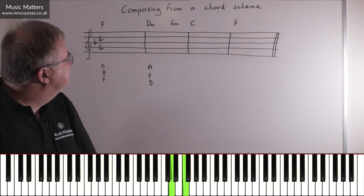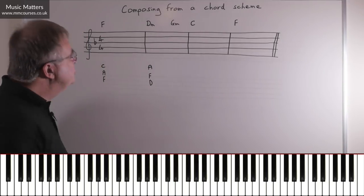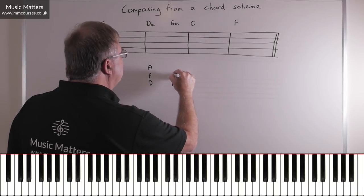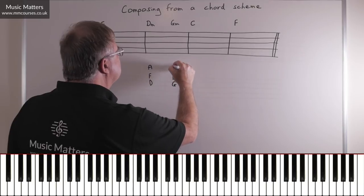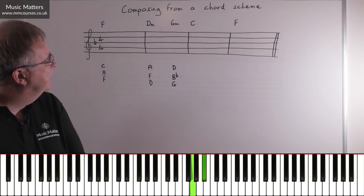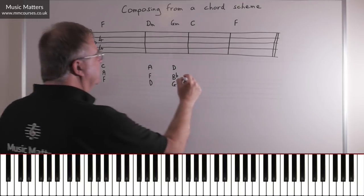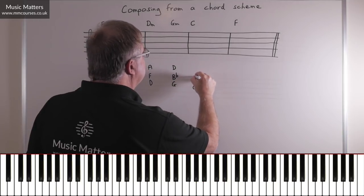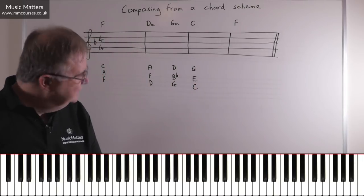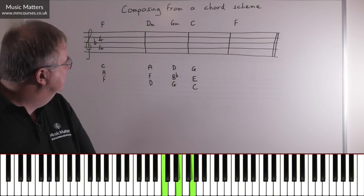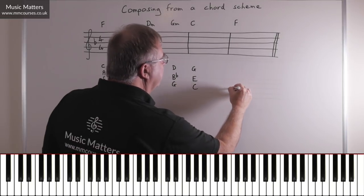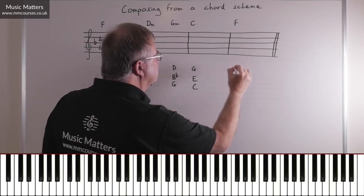So that's D, F, A. In G minor, the notes are G, B-flat, D. So G, B-flat, D. In C major, the notes are C, E, G. C, E, G. And of course F major is back to where we started with F, A, C.